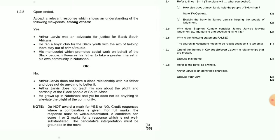Question 1.2.8: Refer to the novel as a whole — 'Otter Jovis is an admirable character.' Discuss your view. If you say yes: Otter Jovis was an advocate for justice for black South Africans; he ran a boys' club for black youth to help them stay out of crime. If you say no: Otter Jovis does not have a close relationship with his father and does not do anything to better it.